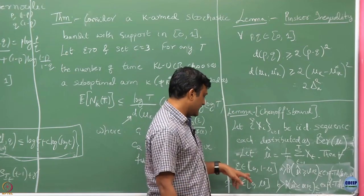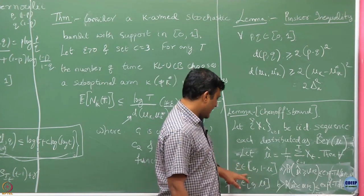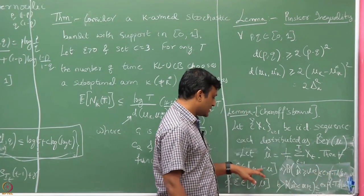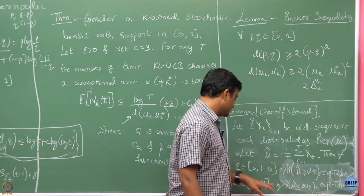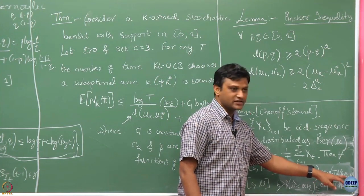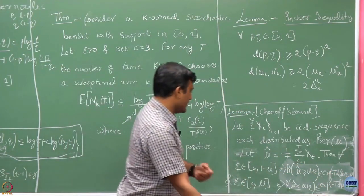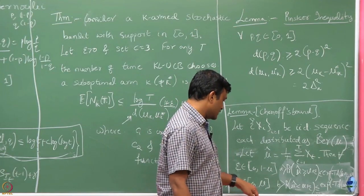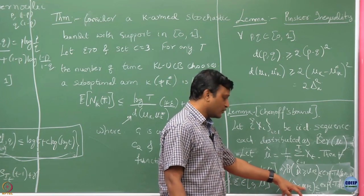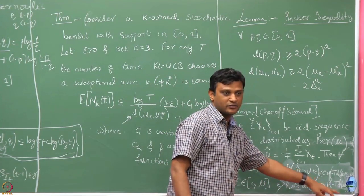Now let us note the parameter epsilon range: it goes from 0 to 1 minus mu. When epsilon is 0, mu plus epsilon is simply mu, and when epsilon is at its largest value of 1 minus mu, that quantity takes value 1. And when epsilon is between 0 and mu, we can argue that the probability of mu-hat being less than or equal to mu plus epsilon is exponential of minus T times the divergence between mu plus epsilon and mu.